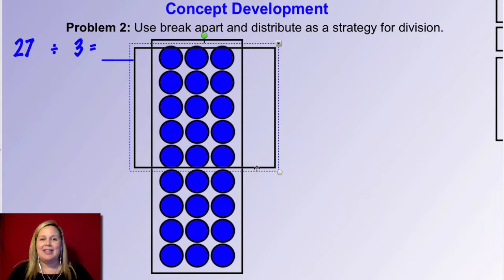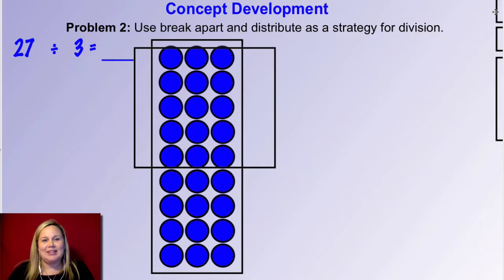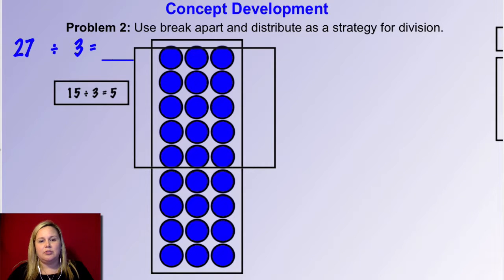Now I want you to write a division equation that matches that boxed portion of the array. Remember, division starts with the total — so what's the total number in this box? What did we divide it by? Go ahead and click pause, write that down on your dry erase board, then click play when you're ready to go over it. Here's what I came up with: 15 divided by 3, because that was my total. We divided it into three in each group and that gave me 5 groups. So 15 divided by 3 equals 5.